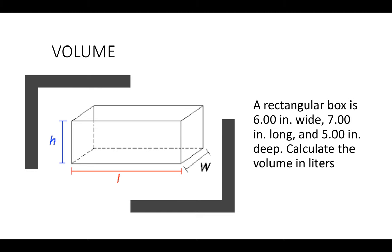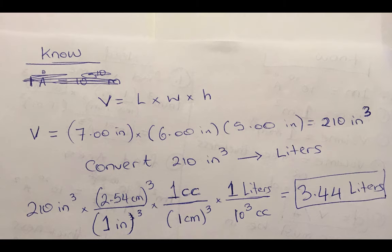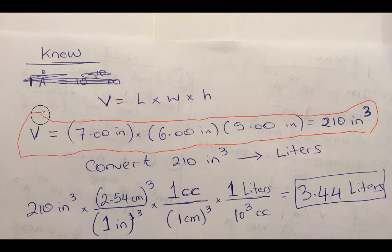So here's my attempt. You probably solved it a different way, but first I found the volume in inches. I just multiplied all three things and I got 210 cubic inches. Inch times inch times inch is cubic inches.